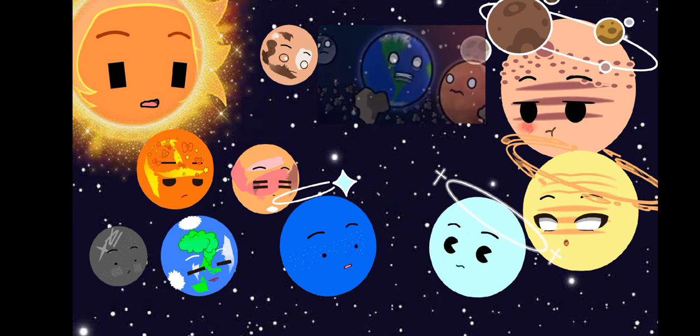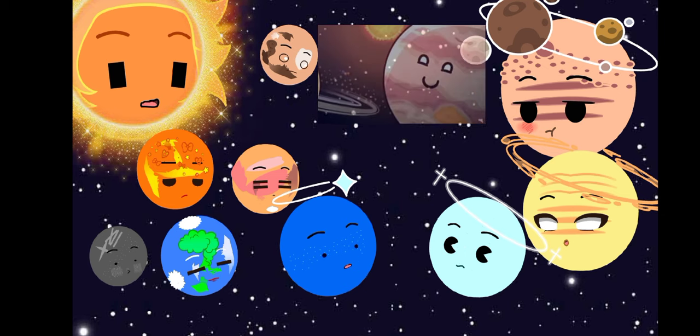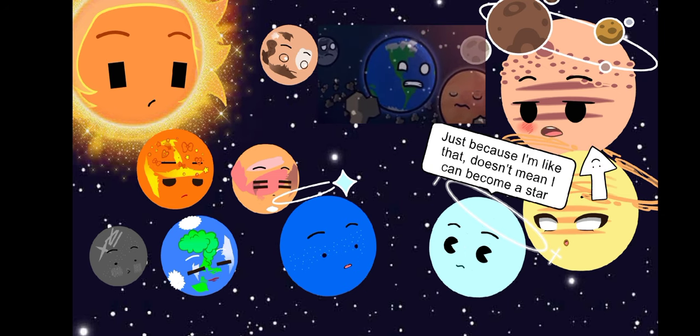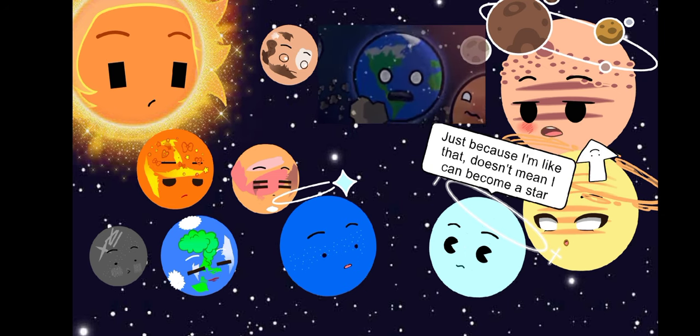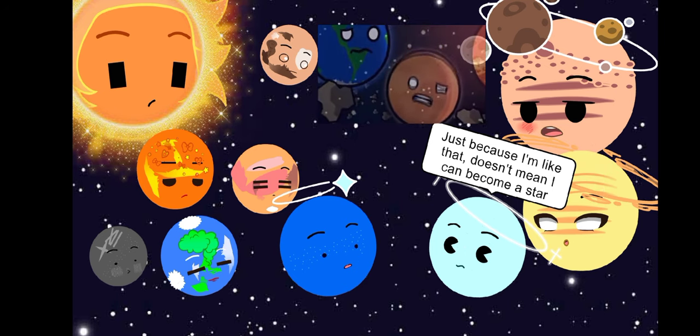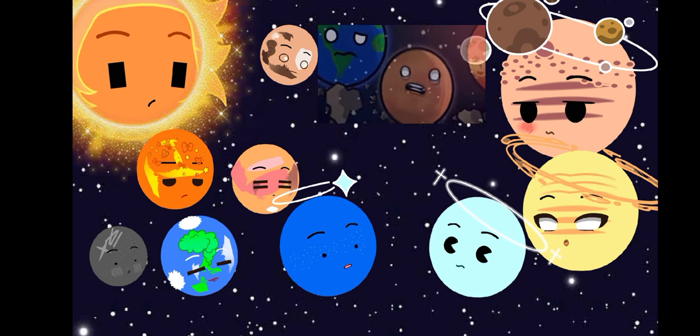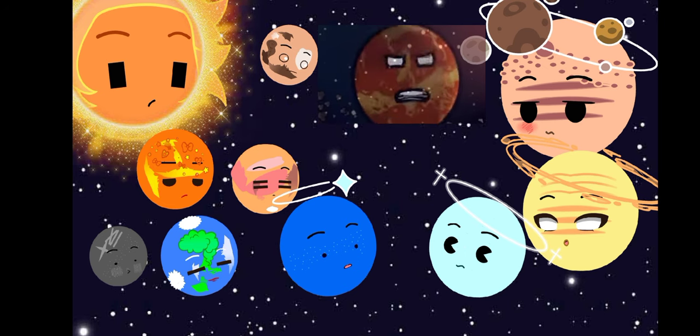But you said it yourself. Jupiter is super huge, made of basically the same stuff as the sun, and has strong gravity. He could become a star. Yeah but he's always been like this. Why should that change? He's bigger than some actual stars in this galaxy.